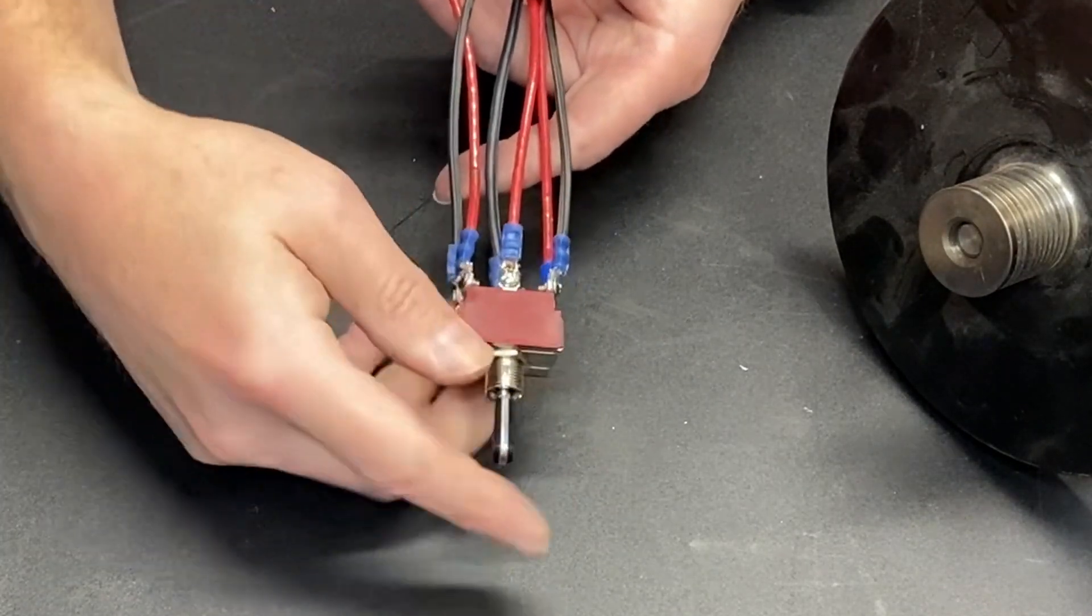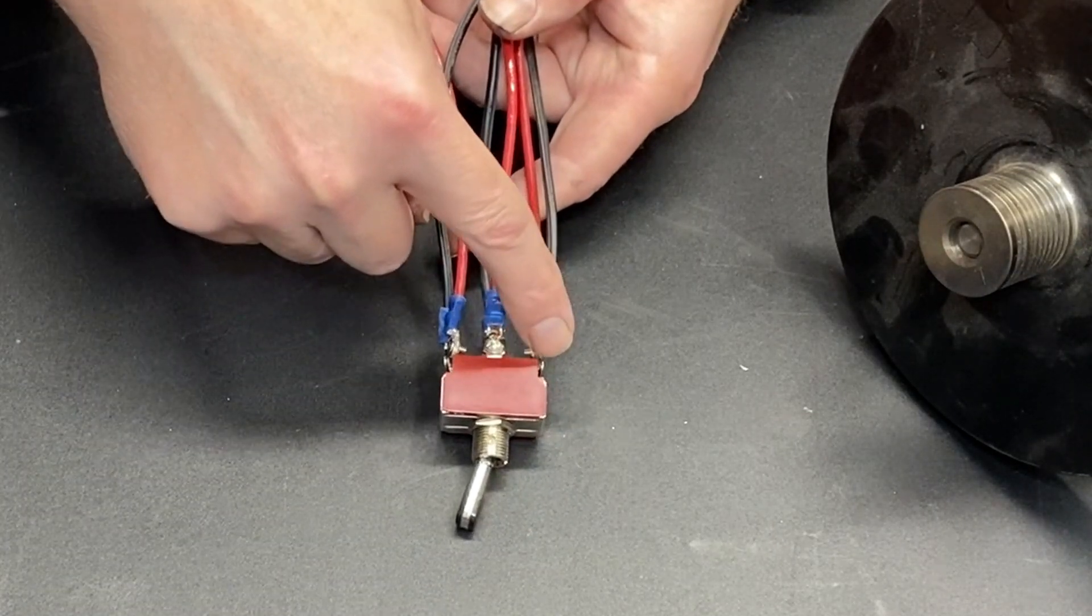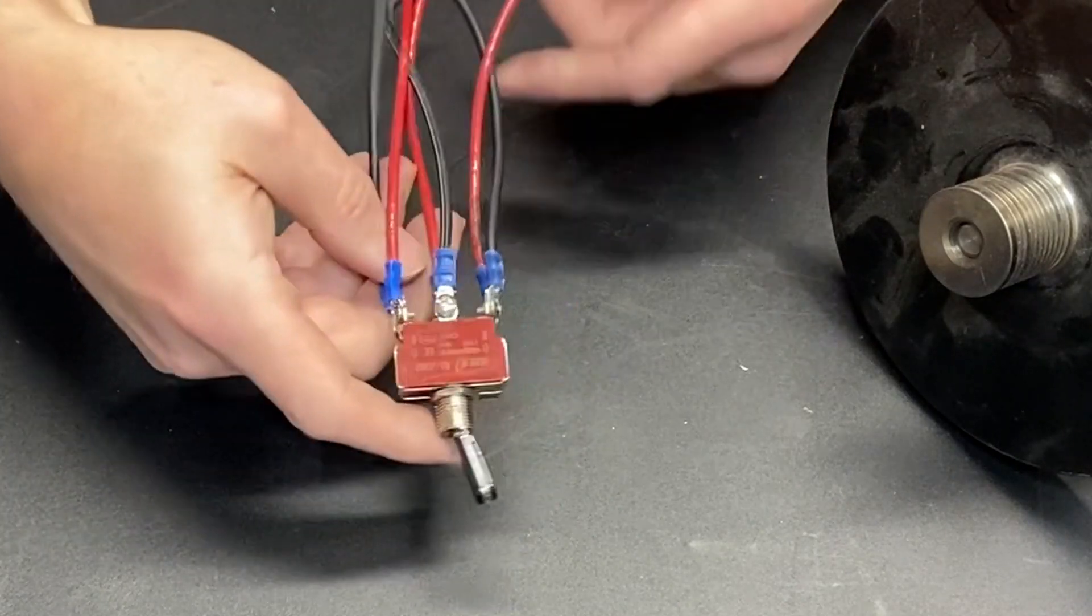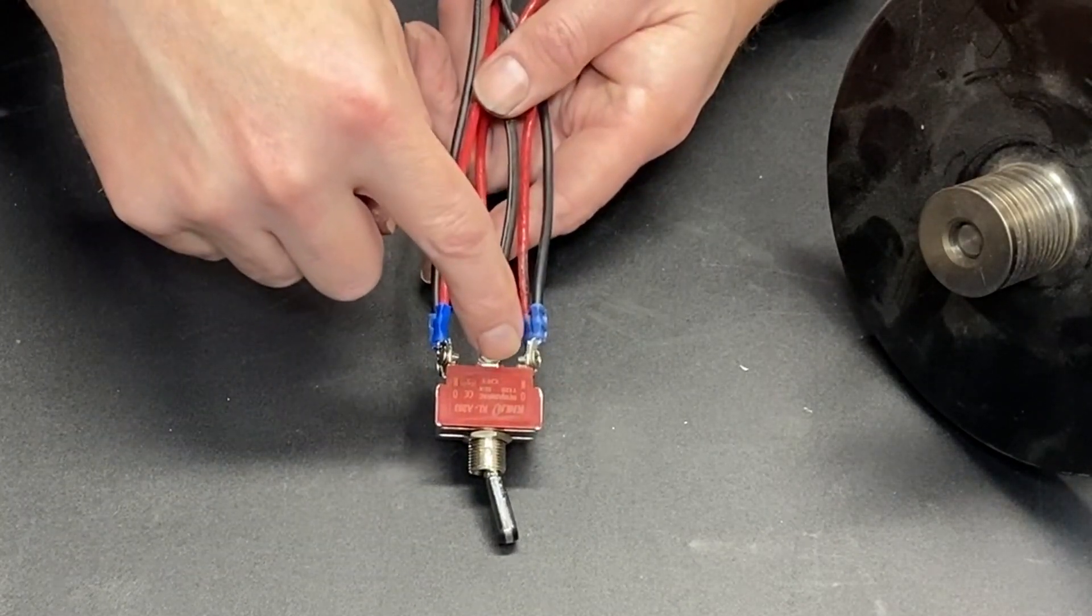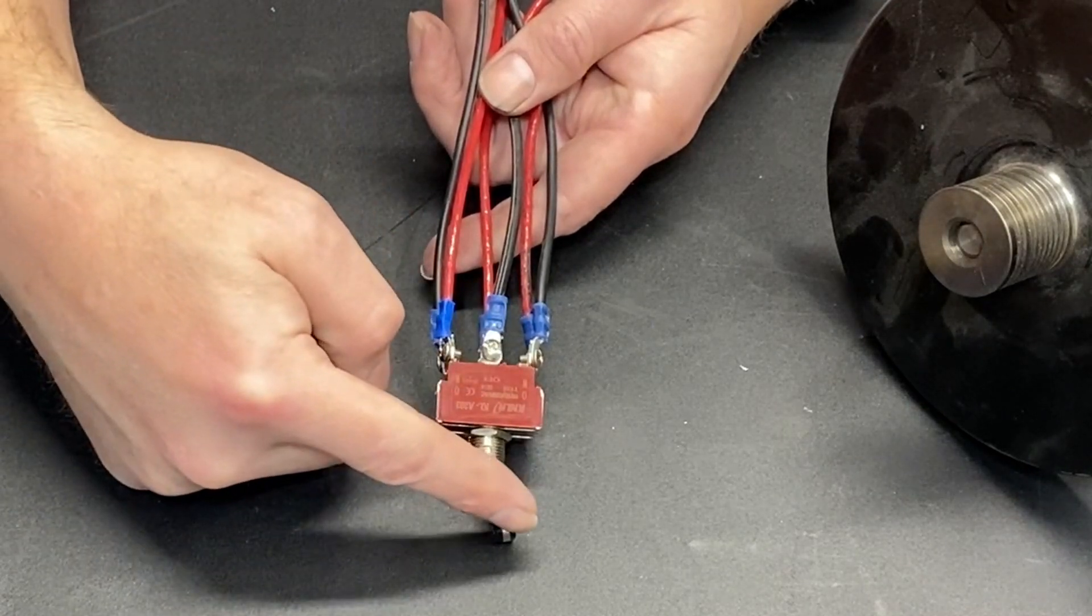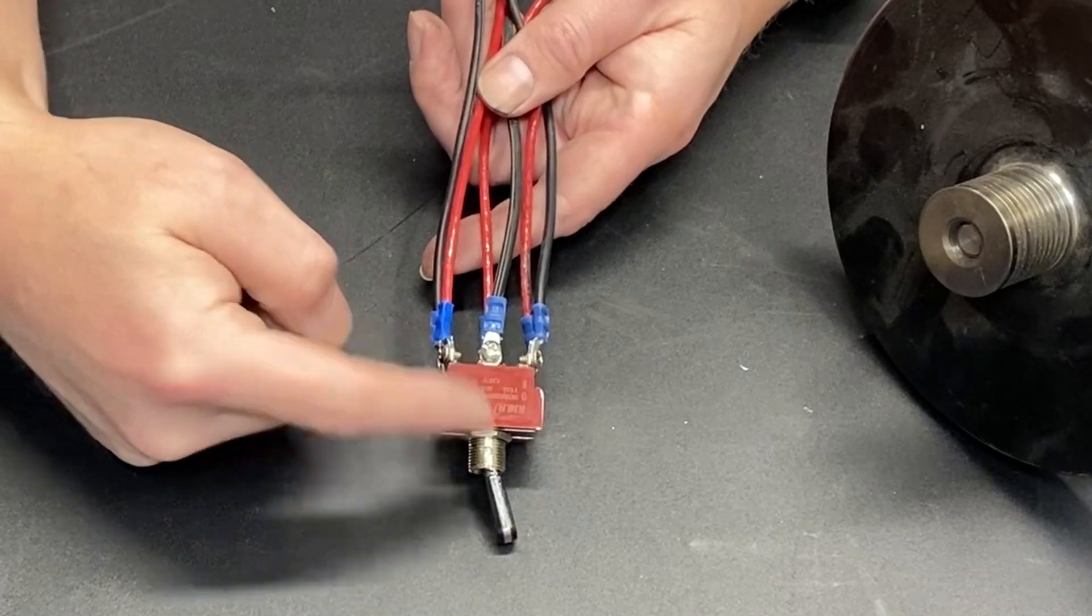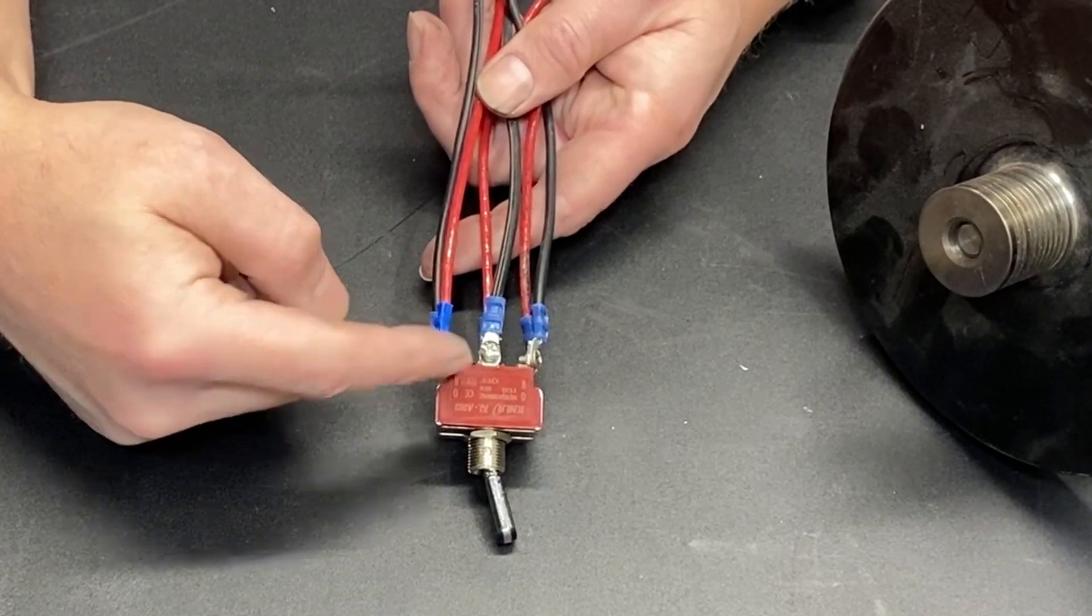When the switch is switched this way, it's connecting the center terminal to this side. We flip it over, it's connecting the center terminal to this side. So, the center terminal is getting connected to the terminal that basically the paddle is pointing at.